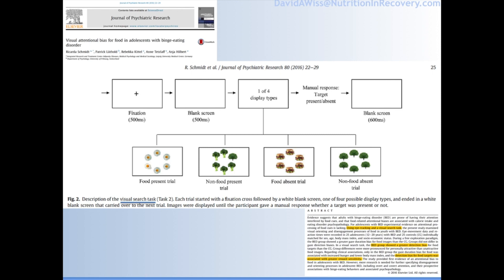This was looking at adolescents — it's an example of a visual search task. You can see from a blank screen there will be pictures of either food or other stimuli, and they track the eye and the way that the brain responds. Essentially, adolescents with binge eating disorder in this study showed a greater detection bias for food targets compared to controls. And those that had a detection bias for food were associated with much greater reward sensitivity, which is something we study in addiction.